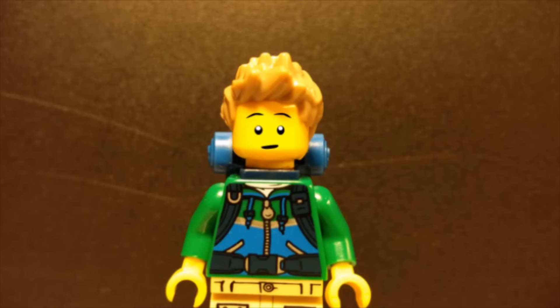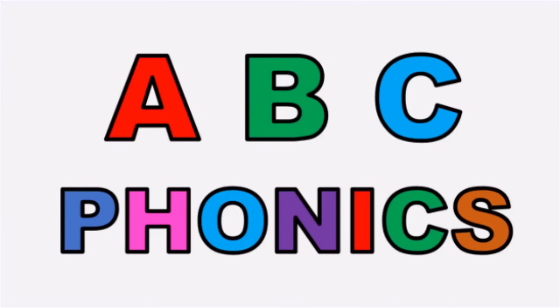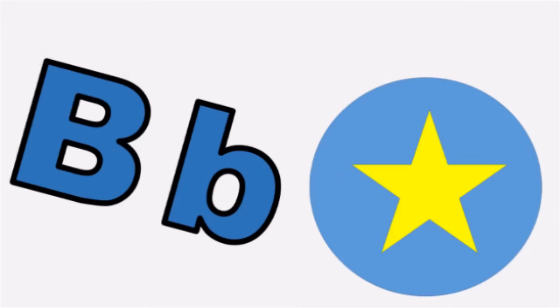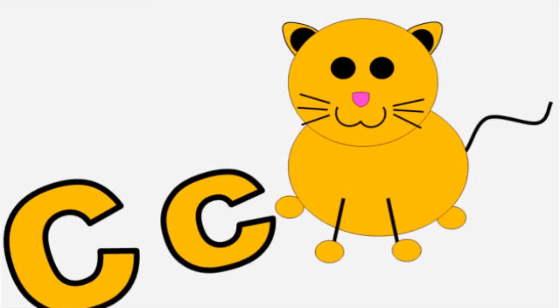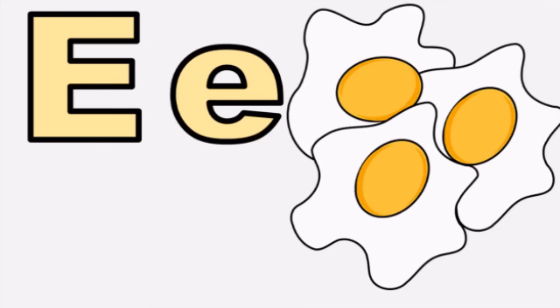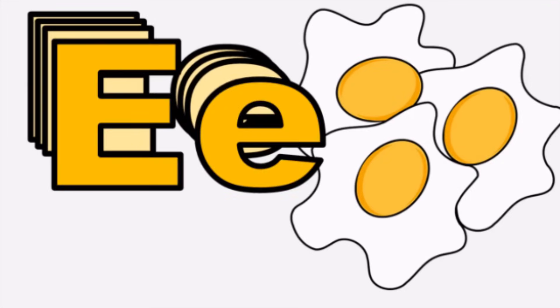Hey boys and girls, let's sing the Phonics song. Let's go! A for Apple, a, apple. B for Ball, b, ball. C for Cat, k, cat. D for Dog, d, dog. E for Egg, e, egg.